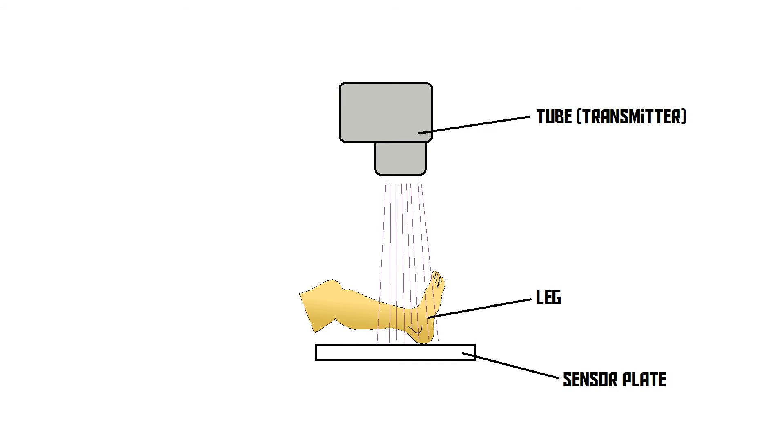These X-rays then leave the vacuum tube and fly through the patient's body. The X-rays first go through the leg of the patient, then they hit a sensor plate. This used to be film, but these days it's a digital sensor.